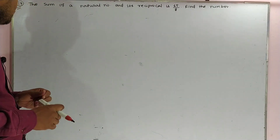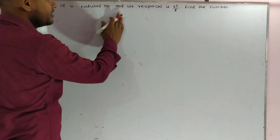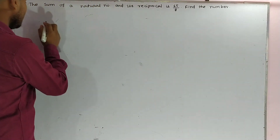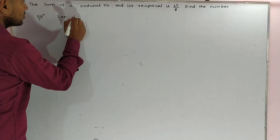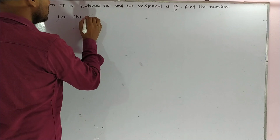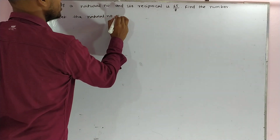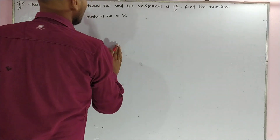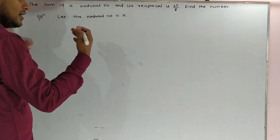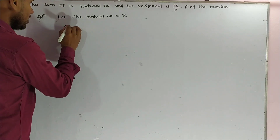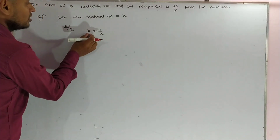Good morning students. Let us see question number 17: the sum of a natural number and its reciprocal is 65/8. We are going to assume it — let the natural number be equal to x. The question is asking that the sum of a natural number and its reciprocal, so according to the question you can write x plus 1 upon x.